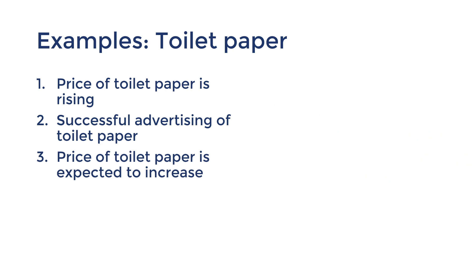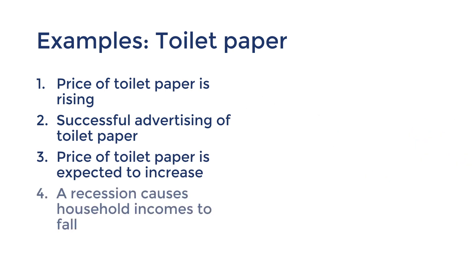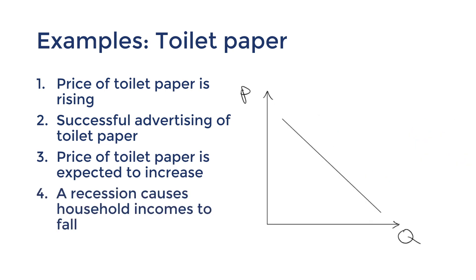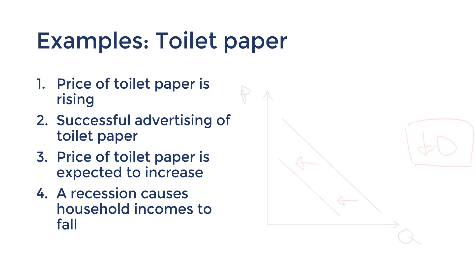Scenario four: a recession causes household incomes to fall. This means fewer people can afford toilet paper. The demand would decrease, shifting left.